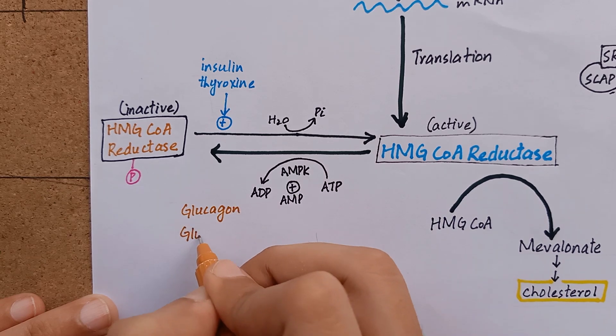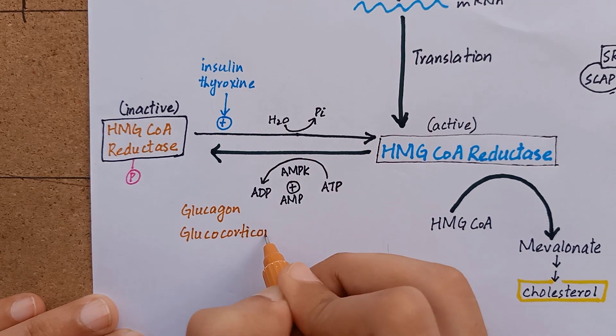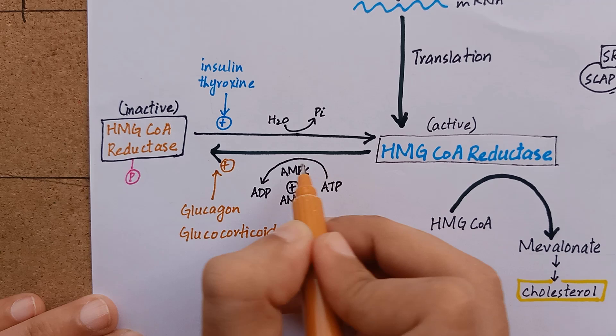Whereas, glucagon and glucocorticoids favor the formation of inactive HMG-CoA reductase, the phosphorylated form.